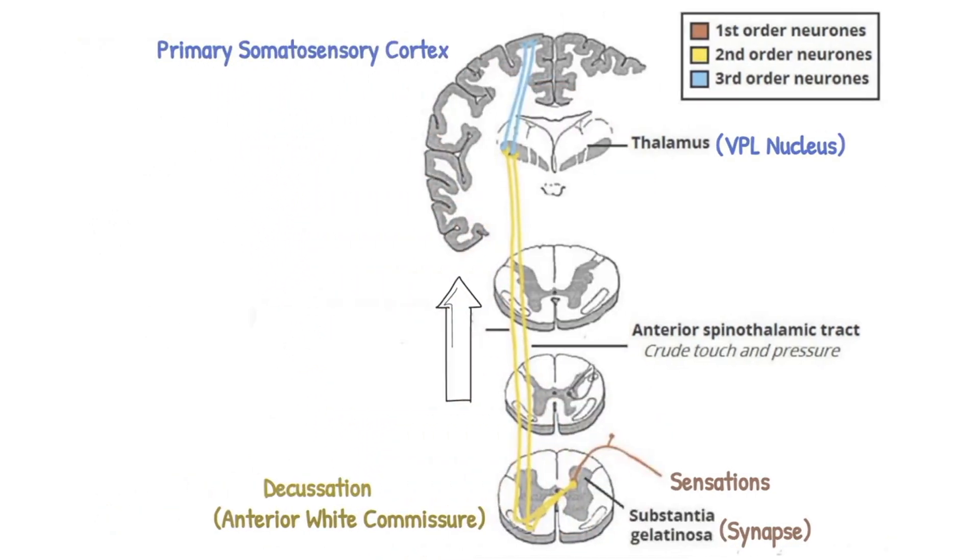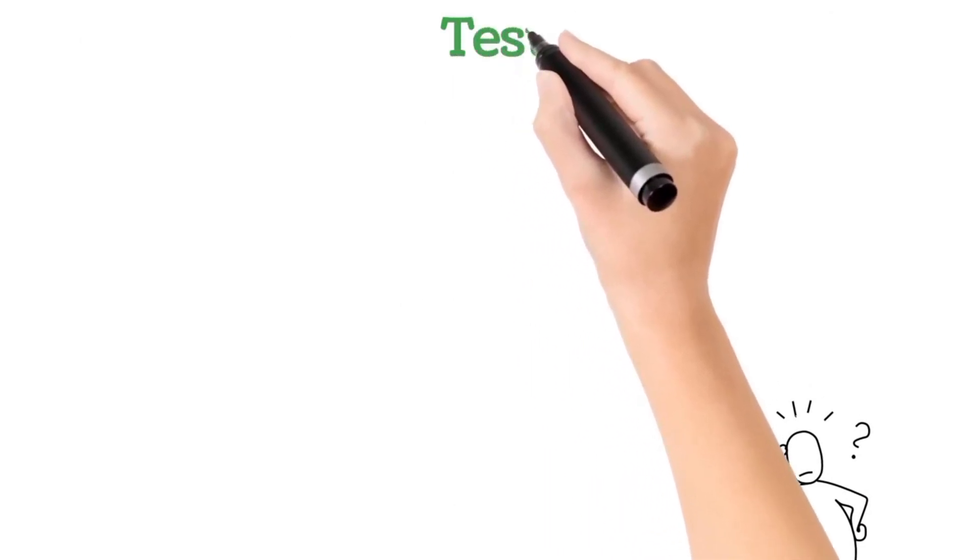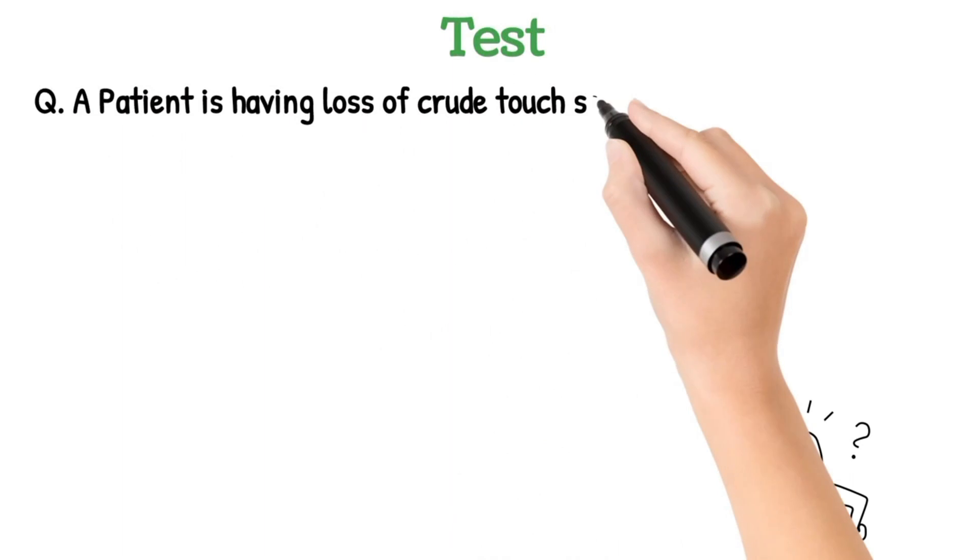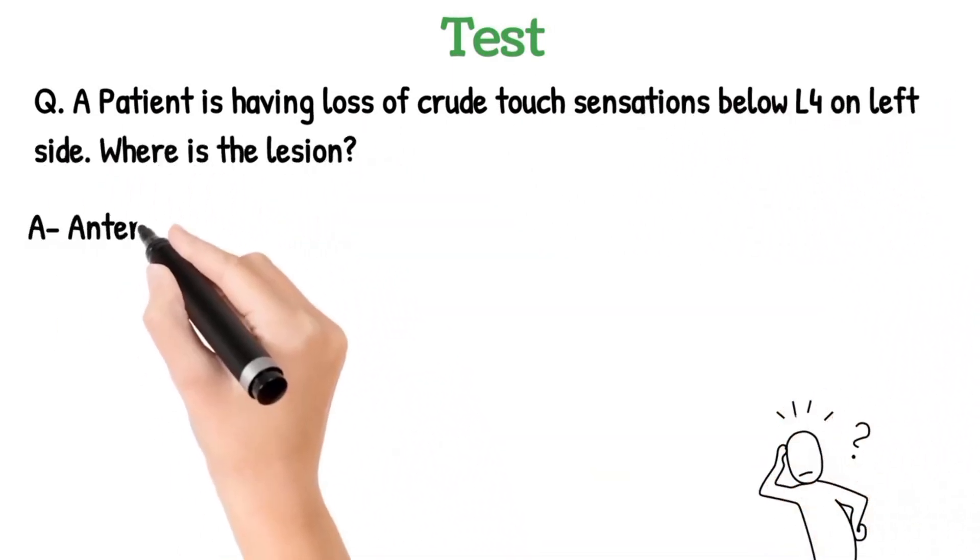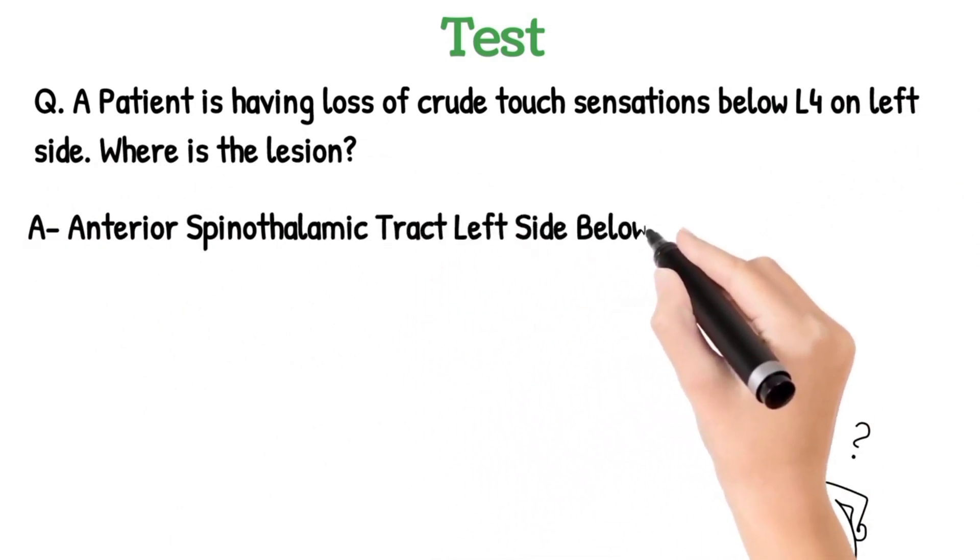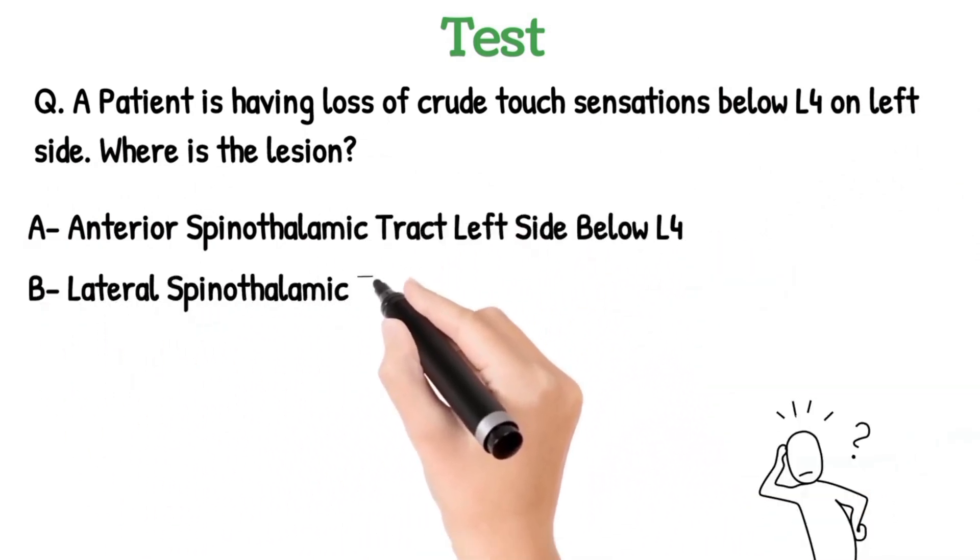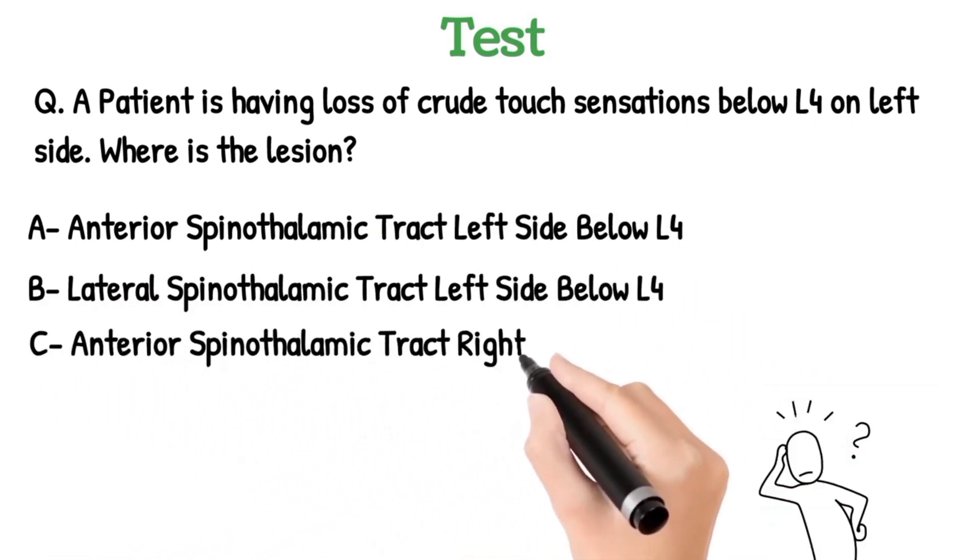Respected doctors, now it's time to test your knowledge. A patient is having loss of crude touch sensations below L4 on left side. Where is the lesion? Option A: Anterior spinothalamic tract left side below L4. B: Lateral spinothalamic tract left side below L4. C: Anterior spinothalamic tract right side above L4. D: DCML left.